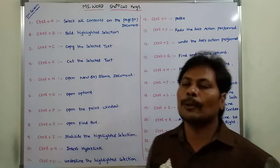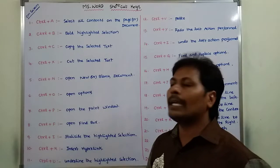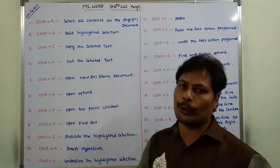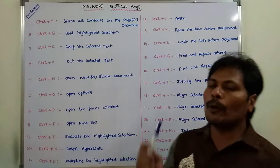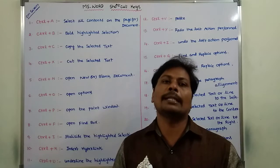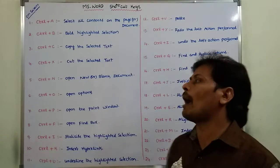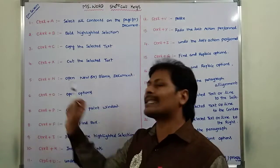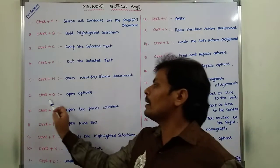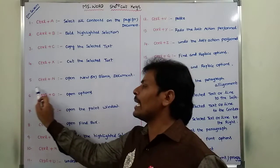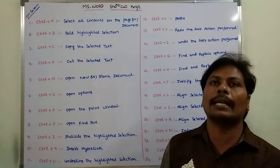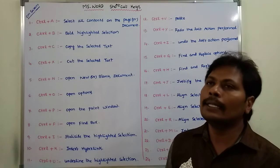Next is Ctrl plus N. This command or key is used to open a new or blank document. Suppose we want to open a new document — we use Ctrl plus N. Next is Ctrl plus O, which is used to open the options in a particular document or page.